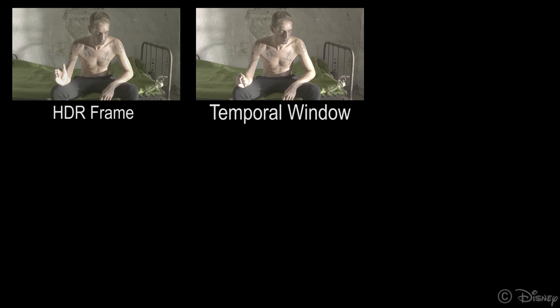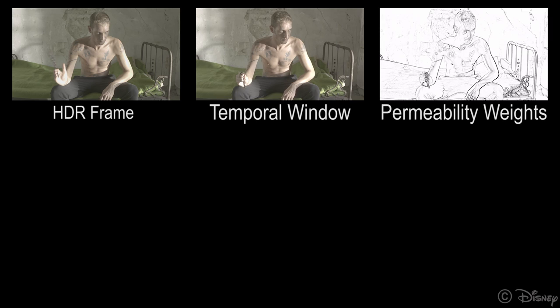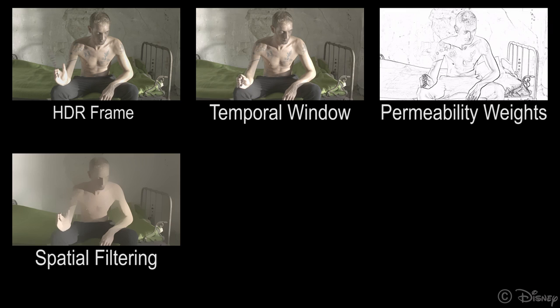Let's take a closer look at how our spatiotemporal filtering process works. For a given HDR frame, we consider a number of consecutive future and past frames. Next, we compute a permeability map that controls the amount of spatial diffusion that occurs between pixels. Brighter means more diffusion. Then we spatially filter the entire temporal neighborhood.